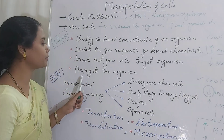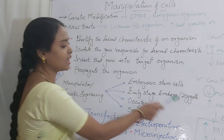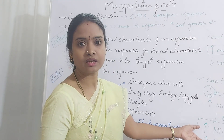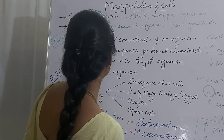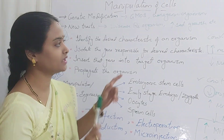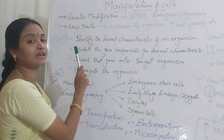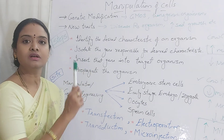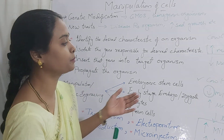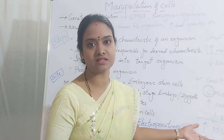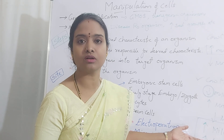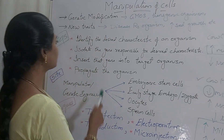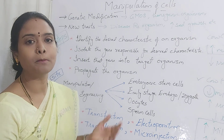The last step is to propagate the organism. By means of breeding techniques, after producing a new trait, you increase the livestock of that cattle. So to summarize: first identify the desired character, then isolate the gene of interest, introduce it into the target organism, then propagate to produce genetically modified organisms — also called transgenic animals.